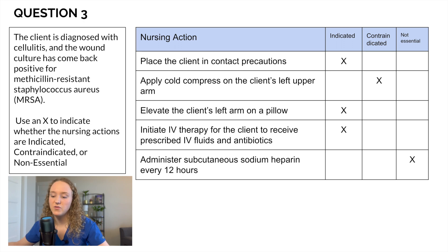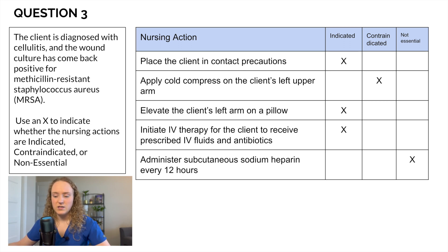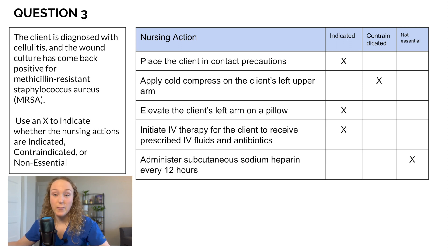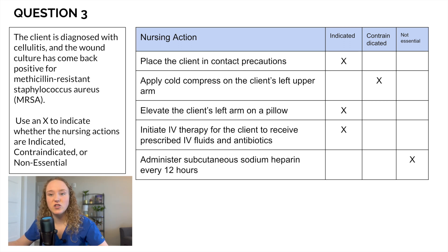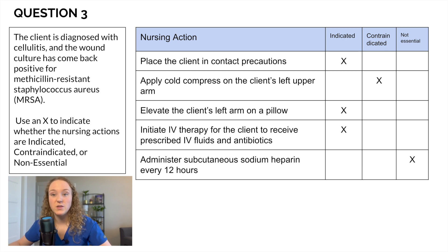Initiating IV therapy for prescribed IV fluids and antibiotics is indicated — the doctor has prescribed these, and given she has MRSA and cellulitis, antibiotics make sense. Administering subcutaneous sodium heparin every 12 hours is non-essential because there's no indication she'll be confined to bed; she'll be walking and moving around. While sub-Q heparin is commonly given in hospital to prevent DVTs, in this case it's not indicated since she's mobile. Always follow your physician orders.